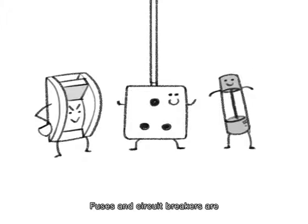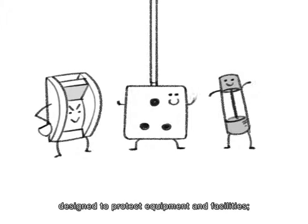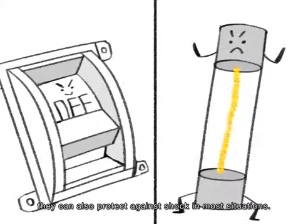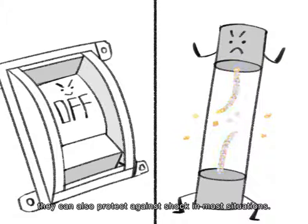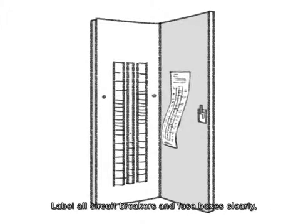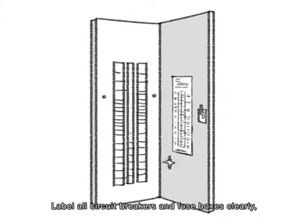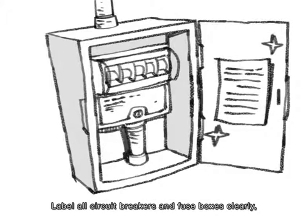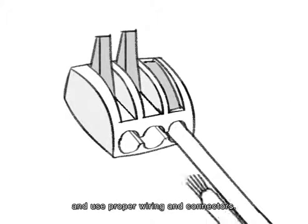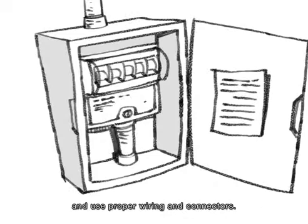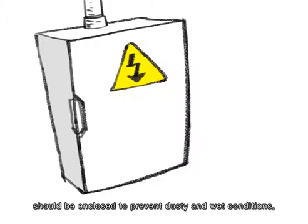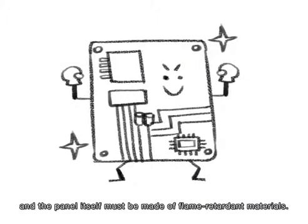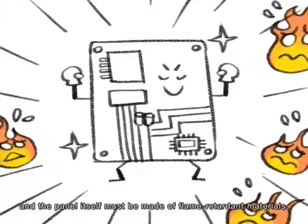Fuses and circuit breakers are designed to protect equipment and facilities. They can also protect against shock in most situations. Label all circuit breakers and fuse boxes clearly, and use proper wiring and connectors. Circuit breakers and panels should be enclosed to prevent dusty and wet conditions, and the panel itself must be made of flame retardant materials.